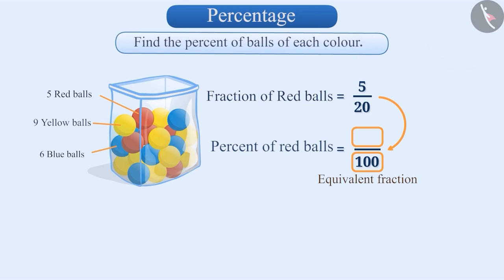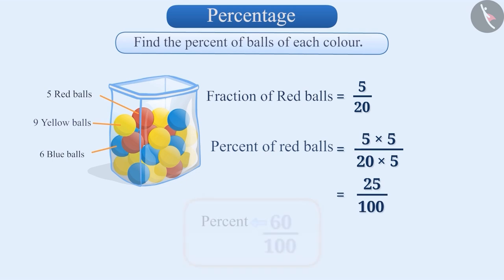Let me explain. We will multiply both the numerator and the denominator of 5 by 20 by 5. By doing this, we will get an equivalent fraction of 5 by 20, that is 25 by 100.